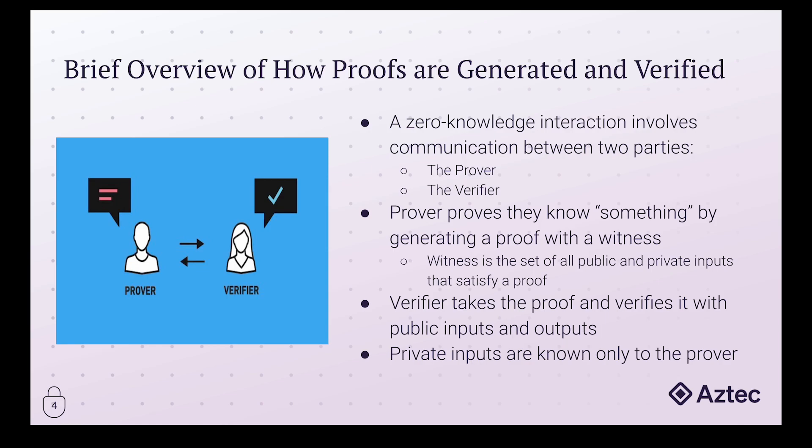Let's say there's a proof that involves sensitive information — you're trying to prove you're the owner of a public address, and the way to do that is to prove that you have the private key for that address. Obviously it would be extremely damaging if that information got out publicly, so you want to have that private key as a private input. That way, no one can gather what your private key is, and there are many other contexts where that's important as well.